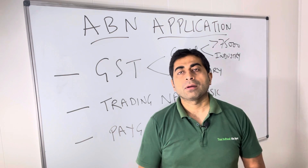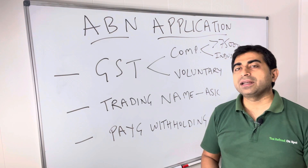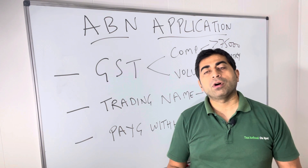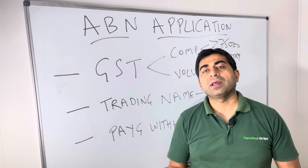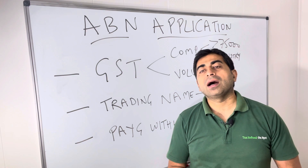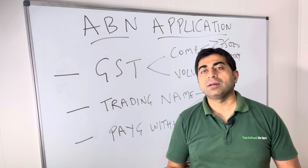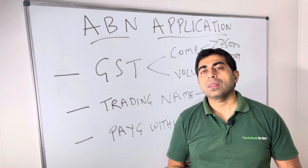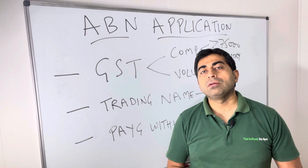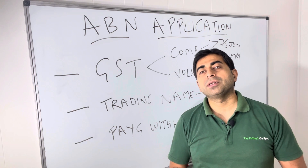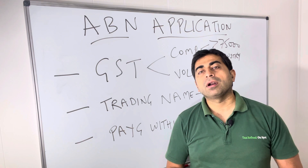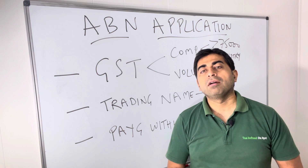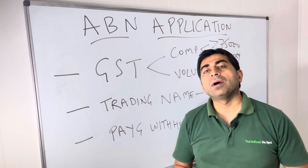The second option is a trading name. For example, if the name of your company is SS PTY LTD, it will ask you if you want to apply for a trading name — like SS Foods or any other trading name. If you say yes, it will take you to the ASIC website, the Australian Securities Investment Commission, where you apply for a trading name. It is not free of charge — you pay some amount, with options for one year or three years.